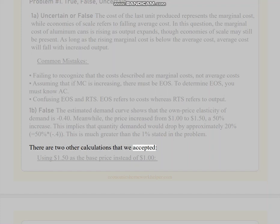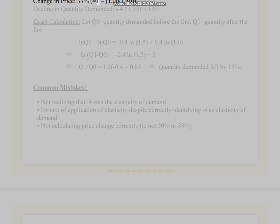There are two other calculations that we accepted. Using $1.50 as the base price instead of $1: Change in price 33% = 1.00 / 1.50, decline in quantity demanded -0.4 * 0.33 = 13%. Exact calculation: let Q0 = quantity demanded before the fire, Q1 = quantity after the fire. LN Q1 - LN Q0 = -0.4 LN 1.5 + 0.4 LN 1.0. LN(Q1/Q0) = -0.4 LN 1.5. Q1/Q0 = 1.5^-0.4 = 0.85. Quantity demanded fell by 15%.